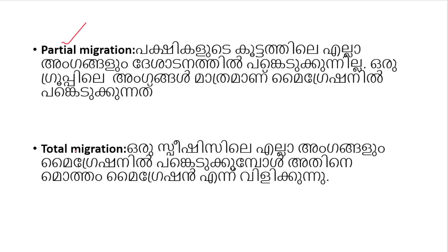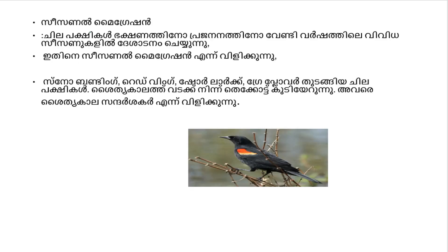Partial migration occurs when only part of a population migrates during the breeding season — this is the seasonal migration. Examples include Rorlark, Grape Lover, Chilapakshi, and Coot.